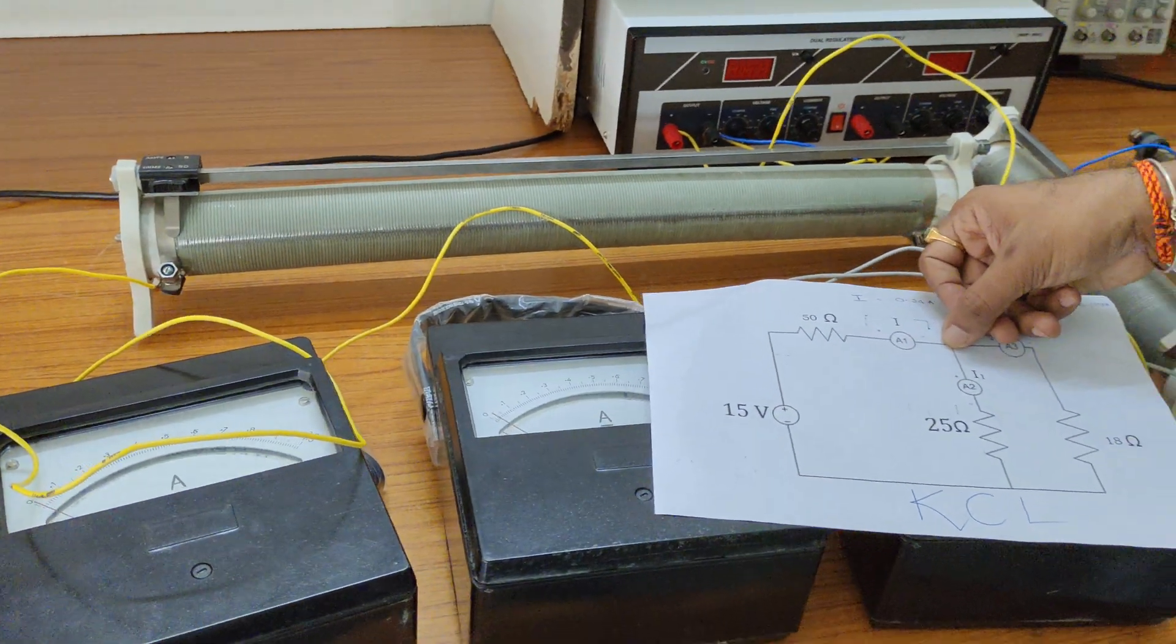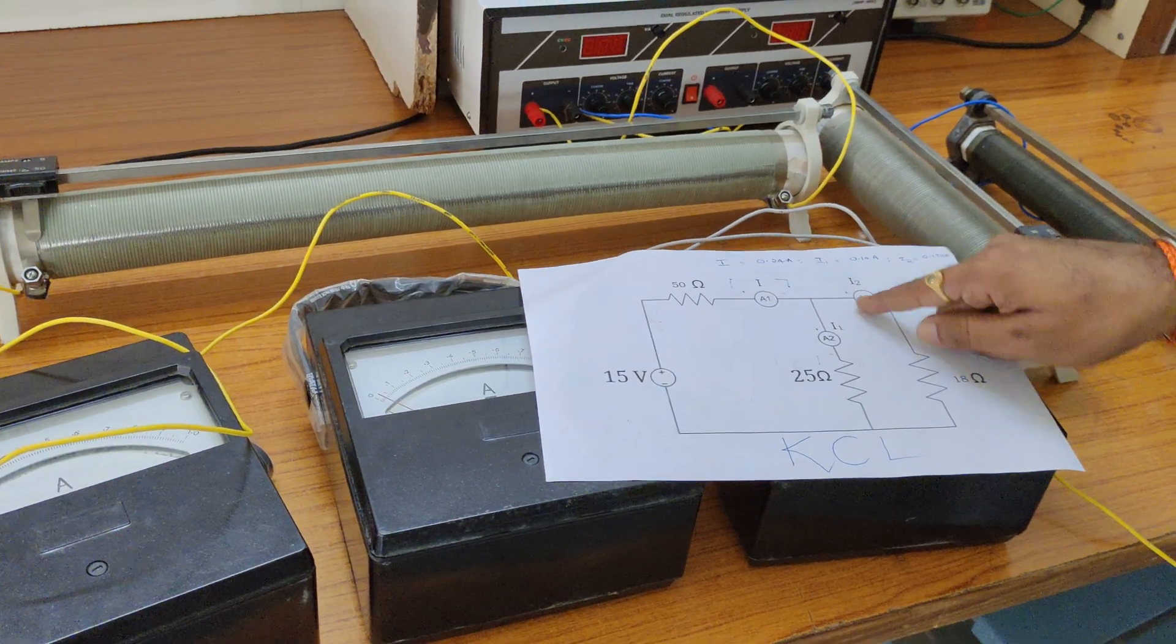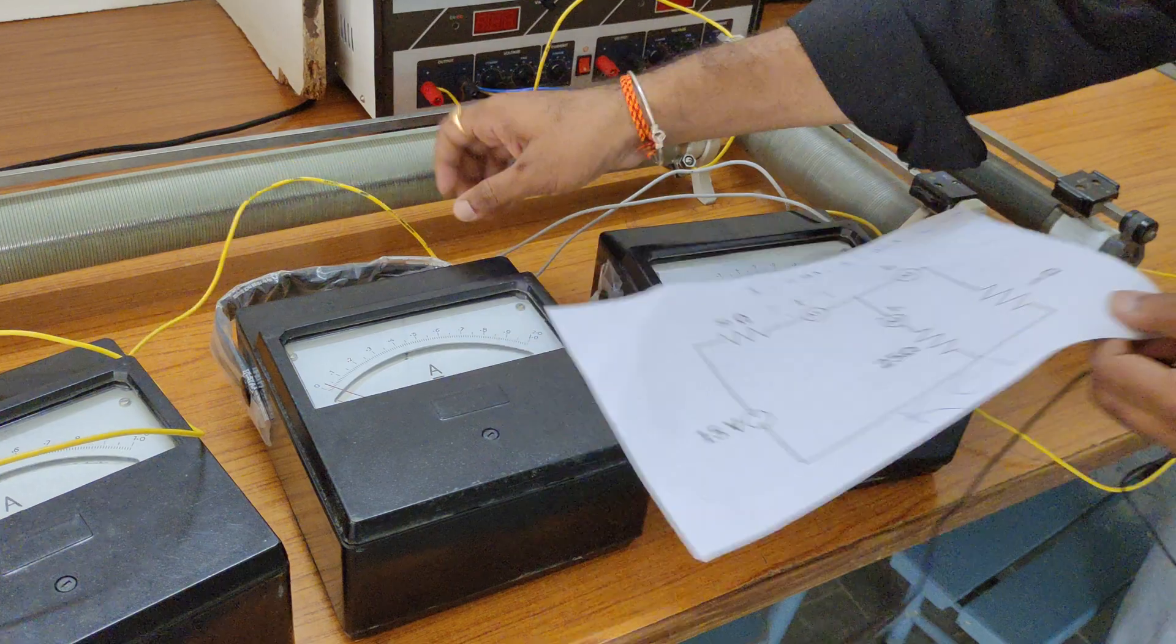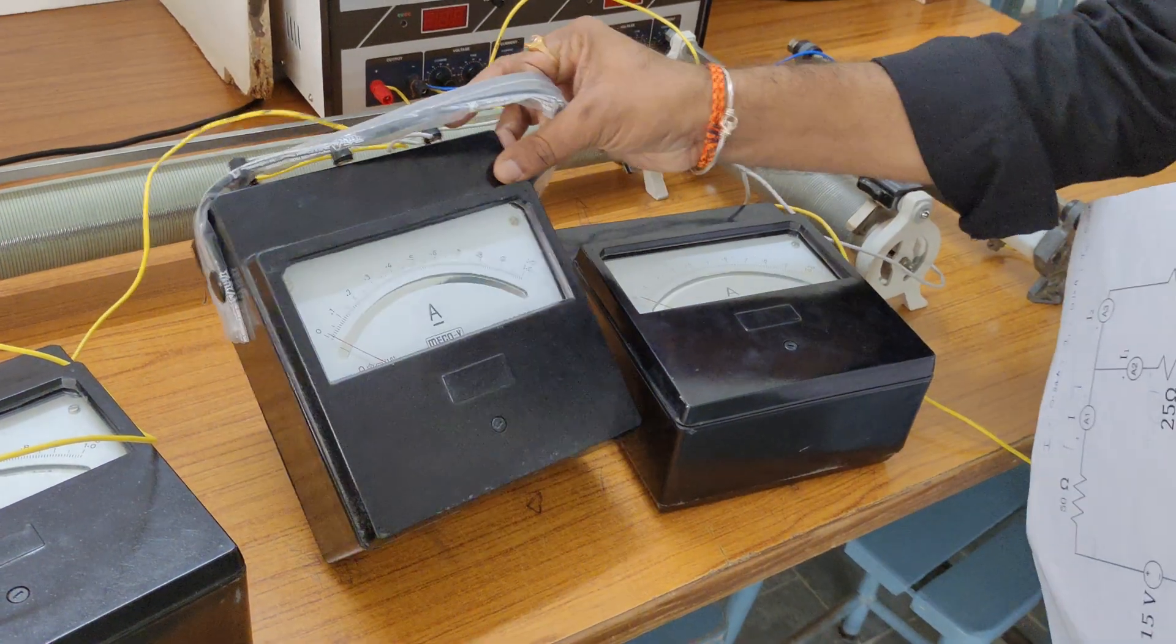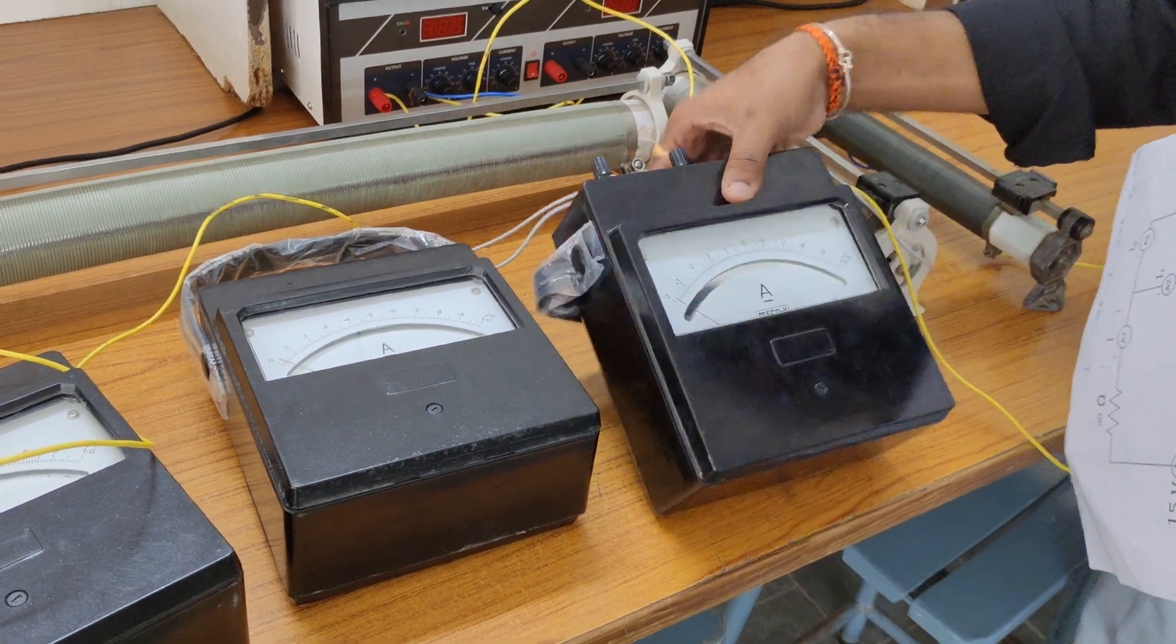This ammeter's other end is connected to two other ammeters - one is this one, another is this one. Both wires like this. This is one of the ammeters. I connected it like this. Another ammeter I also connected like this.